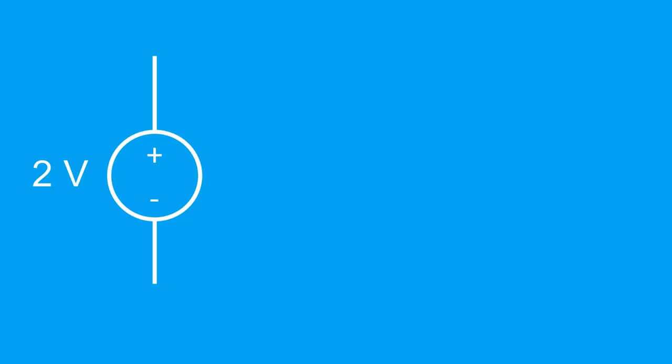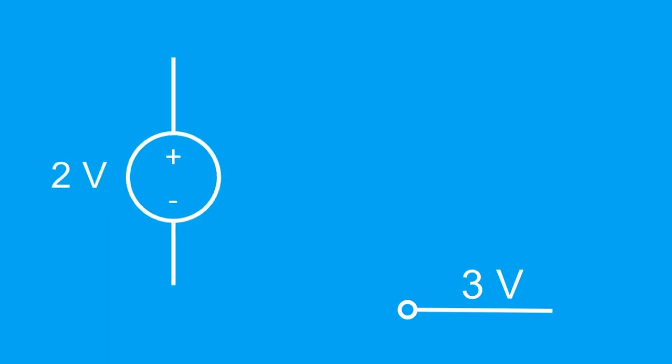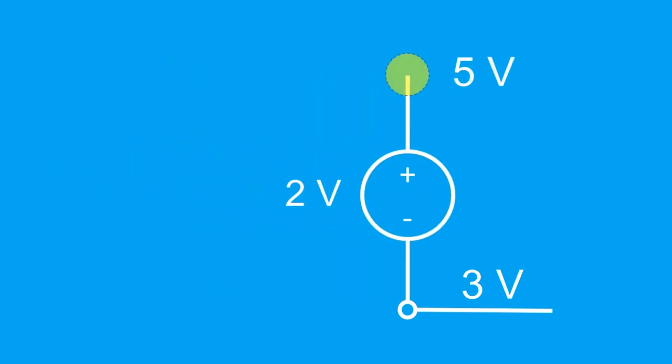As an example, let's say I have a node whose voltage value is 3 volts. If I connected this node directly to the minus terminal, the positive terminal will now have a voltage value of 5 volts.